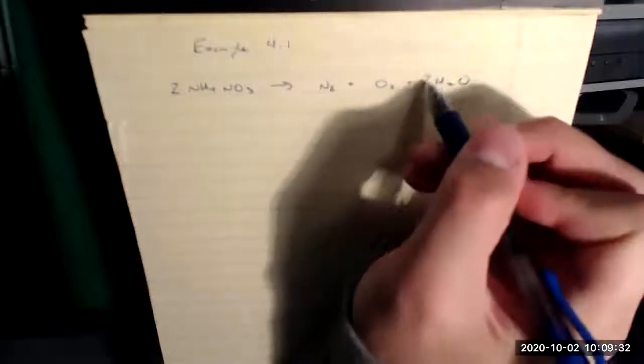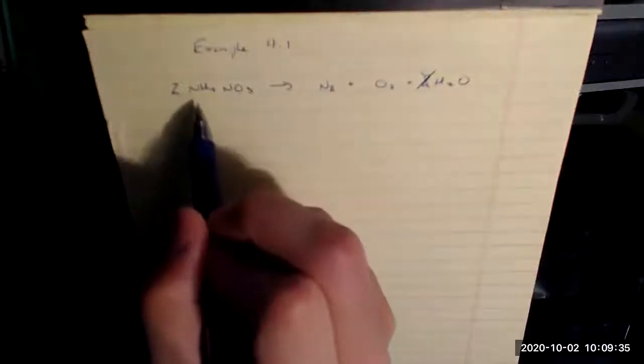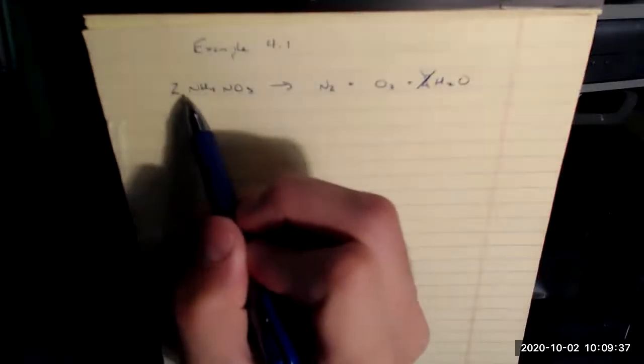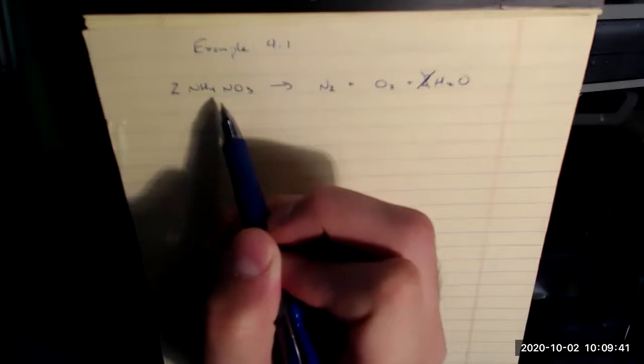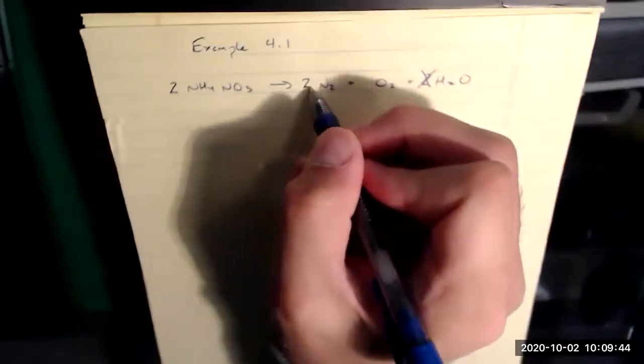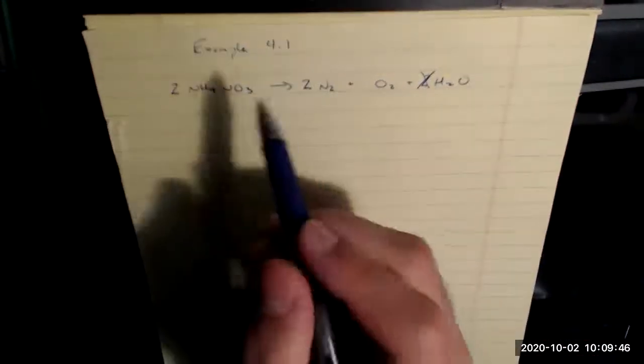So now, coefficient of two over there, I'm going to cross this one out. Now I've got two ammonium nitrates. So one, two, three, four nitrogen. So I need to make that two N2, right?